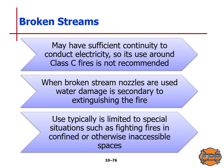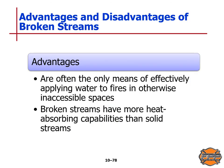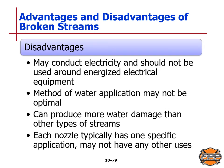When broken stream nozzles are used, water damage is secondary to extinguishing the fire. Use is typically limited to special situations such as fighting fires in confined or otherwise inaccessible spaces. Broken streams are produced by special nozzles such as attic or cellar nozzles, piercing nozzles, and chimney nozzles. The advantages are that broken streams are often the only means of effectively applying water to fires in inaccessible spaces, and they have more heat absorbing capabilities than a solid stream. Disadvantages include that they may conduct electricity and should not be used around energized electrical equipment, the method of water application may not be optimal and can produce more water damage than other stream types, and each nozzle typically has only one specific application with no other uses.